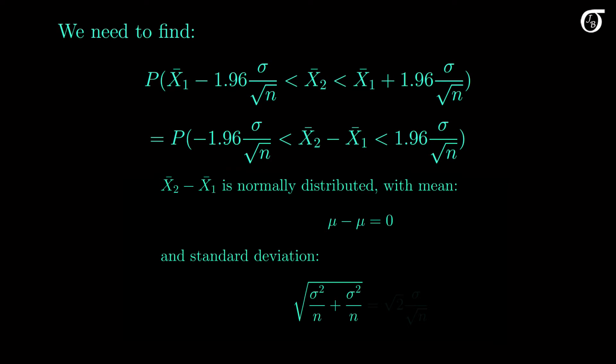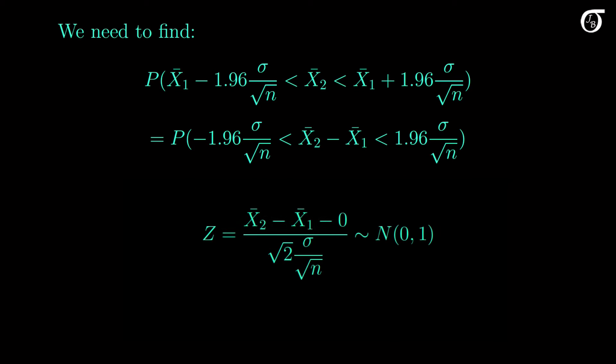And the standard deviation is the square root of the variance, the variance being the sum of the individual variances of the sampling distributions of the sample means. Simplifying a bit, we get a standard deviation of root 2 times sigma over root n. Now we're simply going to standardize in the usual way, by subtracting the mean and dividing by the standard deviation. This quantity has the standard normal distribution.